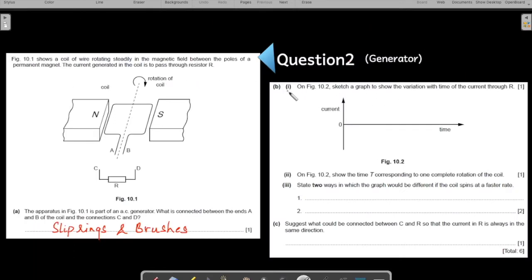So let us come to the next part. On this figure, they are talking about this figure here, this graph. Sketch a graph to show the variation with time of the current through the resistor. Now you have to complete the graph here. You know it is an AC generator.